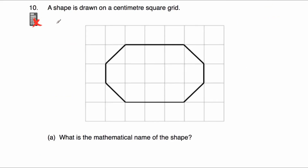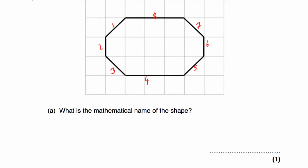Our last question: a shape is drawn on a centimetre square grid, meaning each square has a side length of one centimetre and an area of one centimetre squared. Part A — what is the mathematical name of the shape? Counting the sides: one, two, three, four, five, six, seven, eight sides. So it is an octagon.